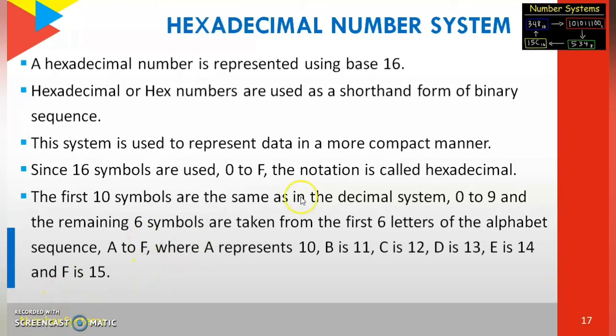In the hexadecimal number system, the total numbers present range from 0 to 15. Totally we have 16 numbers. The total number of digits in the hexadecimal number system is 16. So the base or radix for hexadecimal number system is 16. Hexadecimal numbers are represented using base 16.